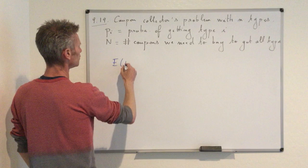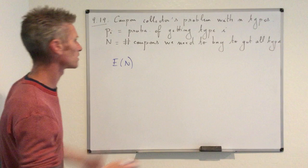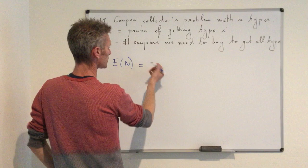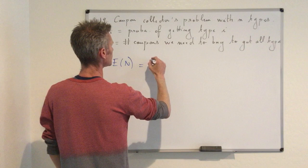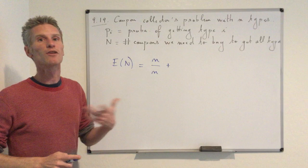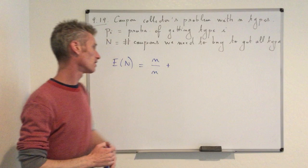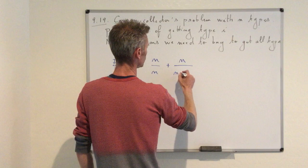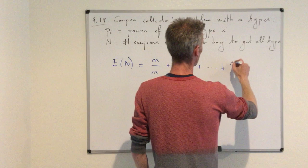The solution we found was E[N], where N is defined as the number of coupons you need to buy to get all types. For the first coupon, you need to buy one to get one type — we write this as N/N. For the second type, you have probability 1 - 1/N to get a new type. Then 1 - 2/N, and so on. For the last type, you only have probability 1/N.